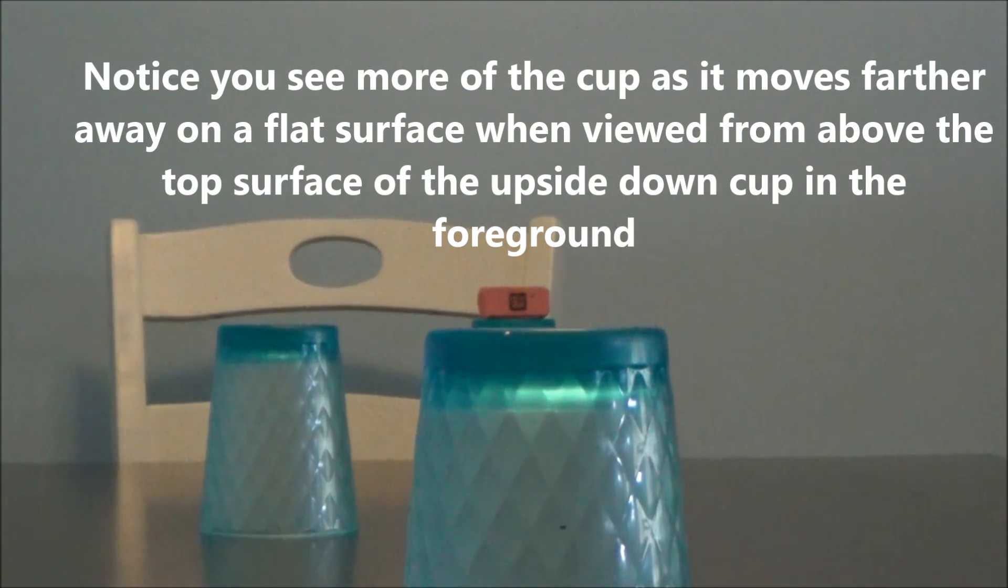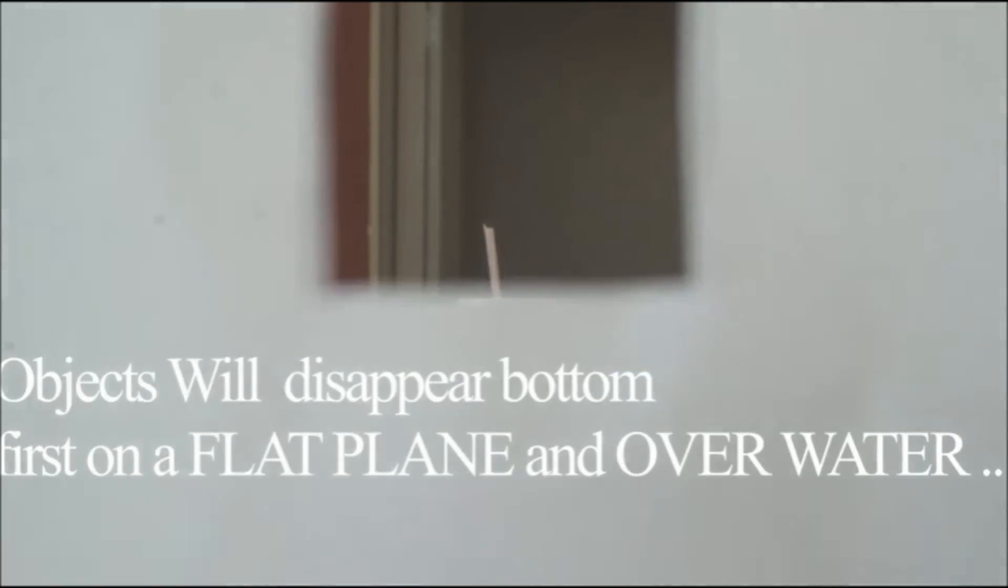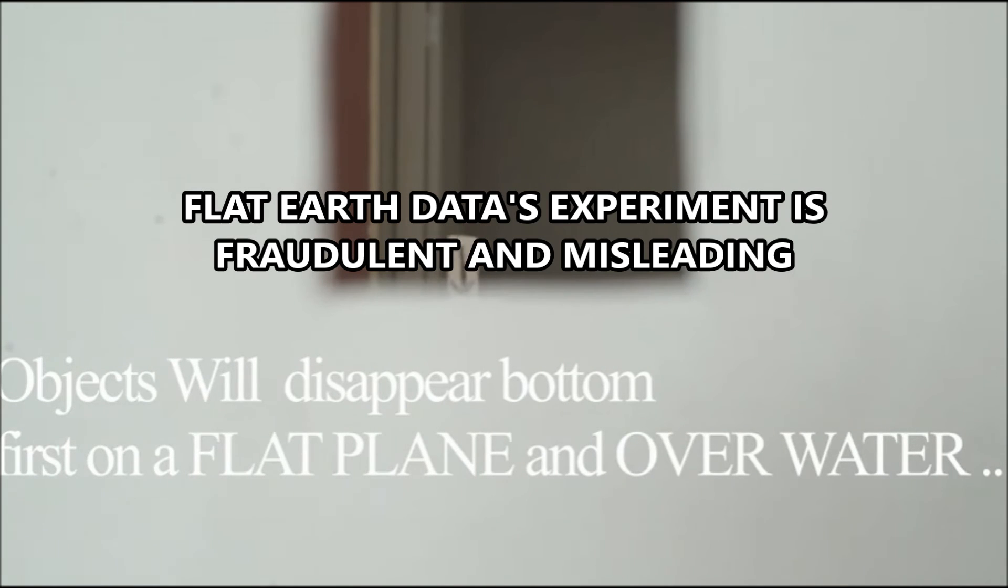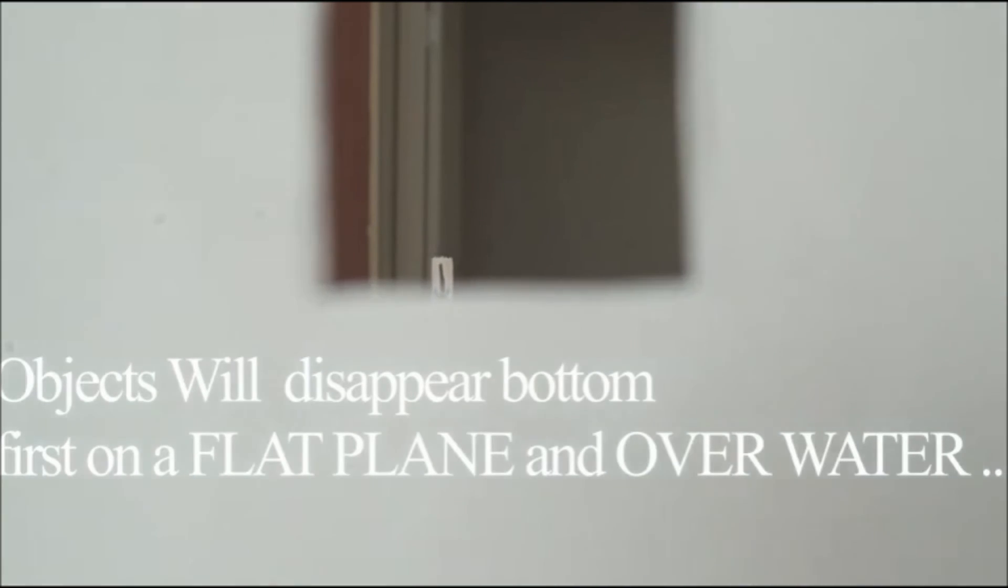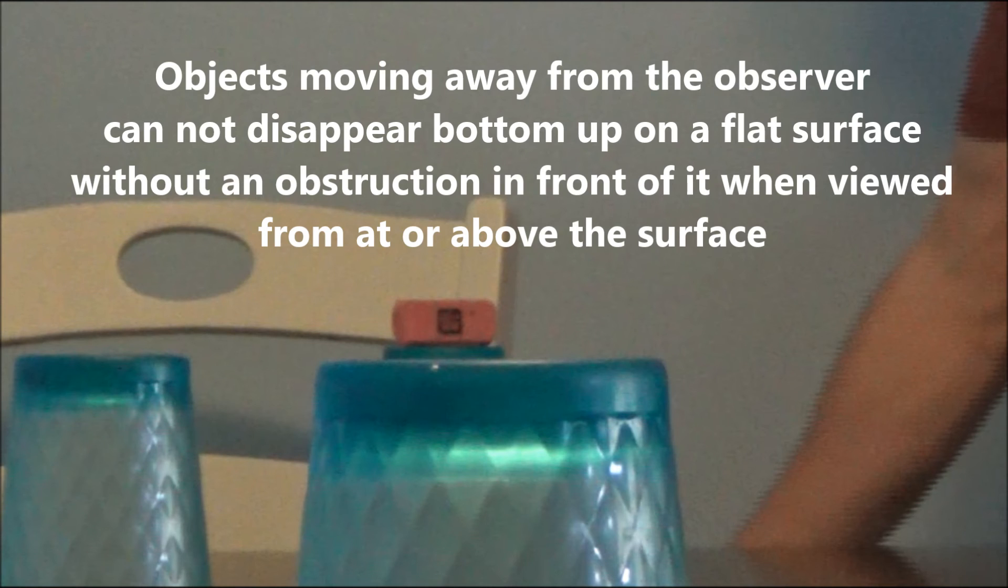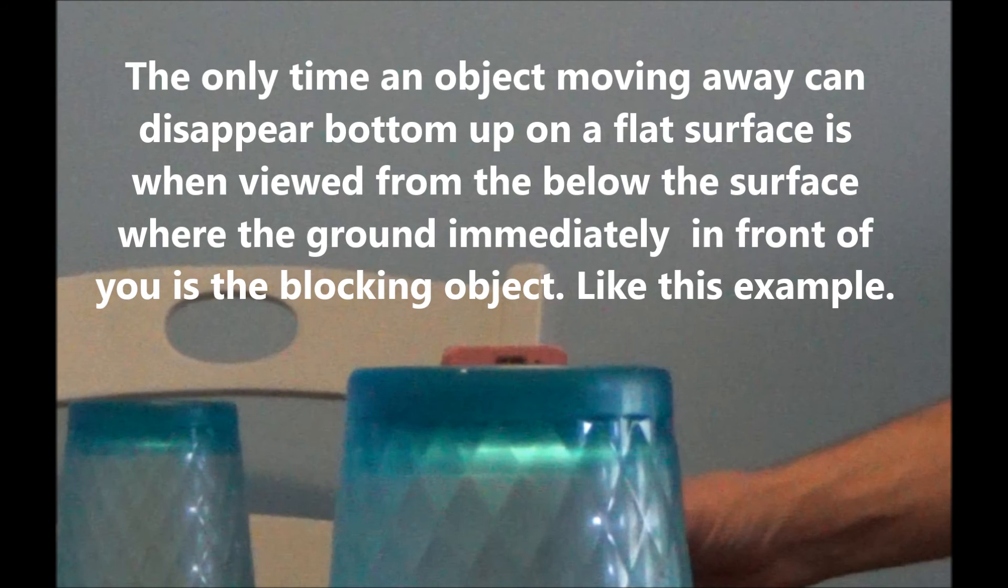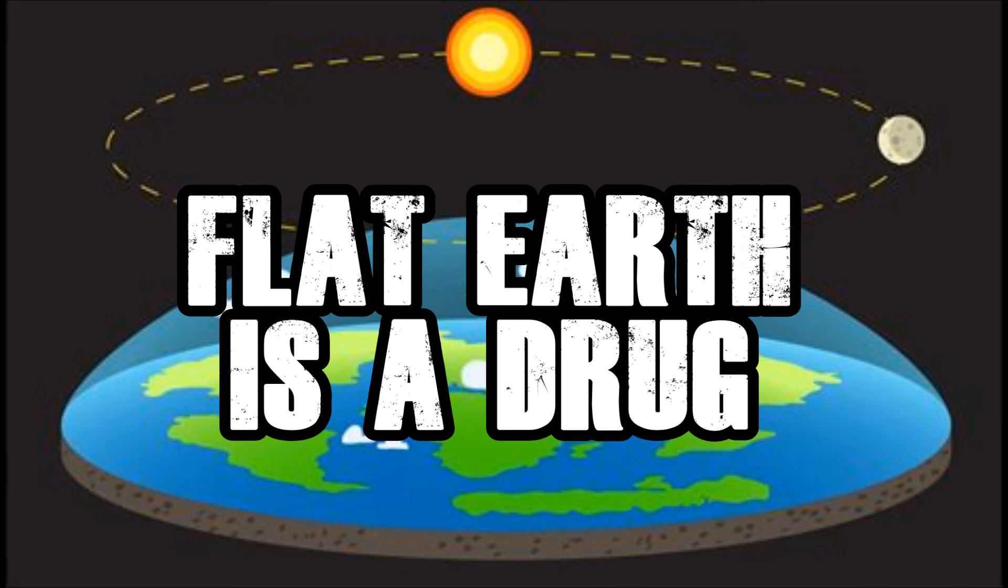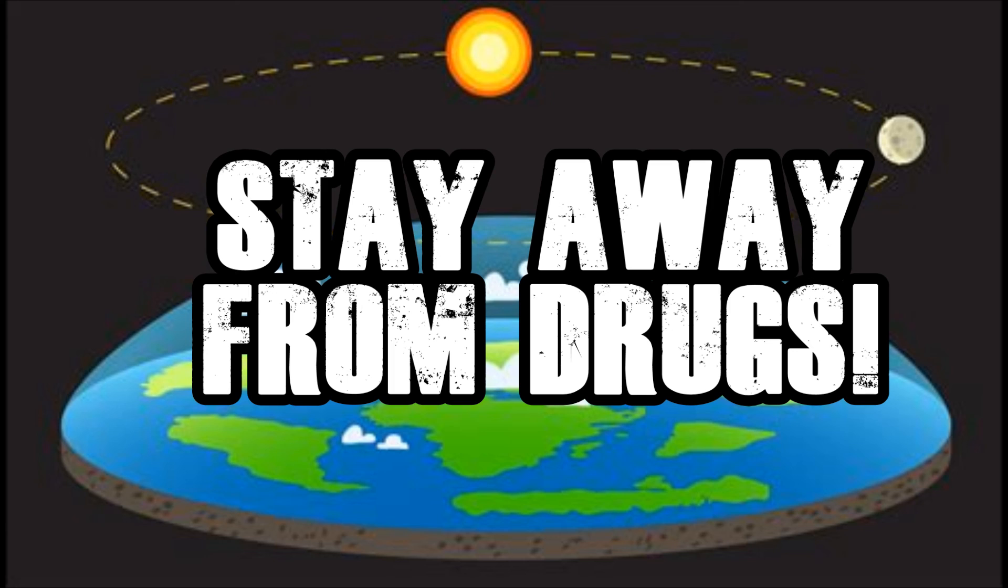Conclusion: Flat Earth Data's experiment showing objects disappear bottom-up on a flat surface is fraudulent and misleading. Objects moving away from the observer cannot disappear bottom-up on a flat surface without an obstruction in front of it when viewed from at or above the surface. The only time an object moving away can disappear bottom-up on a flat surface is when viewed from below the surface where the ground immediately in front of you is the blocking object, like this example. Flat earth is a drug, mkay. Stay away from drugs, mkay.